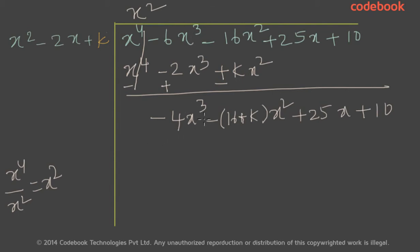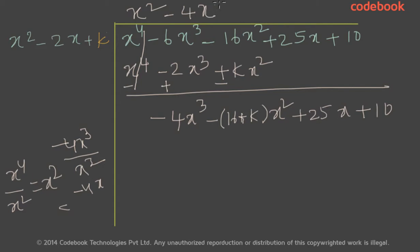The degree of the remainder is 3 and the degree of the divisor is 2, so we still have to continue the division process. Take the first term, minus 4x cubed, and divide it by x squared to get minus 4x. That will be the next term of the quotient. Continuing, you multiply to get minus 4x cubed plus 8x squared minus 4kx.